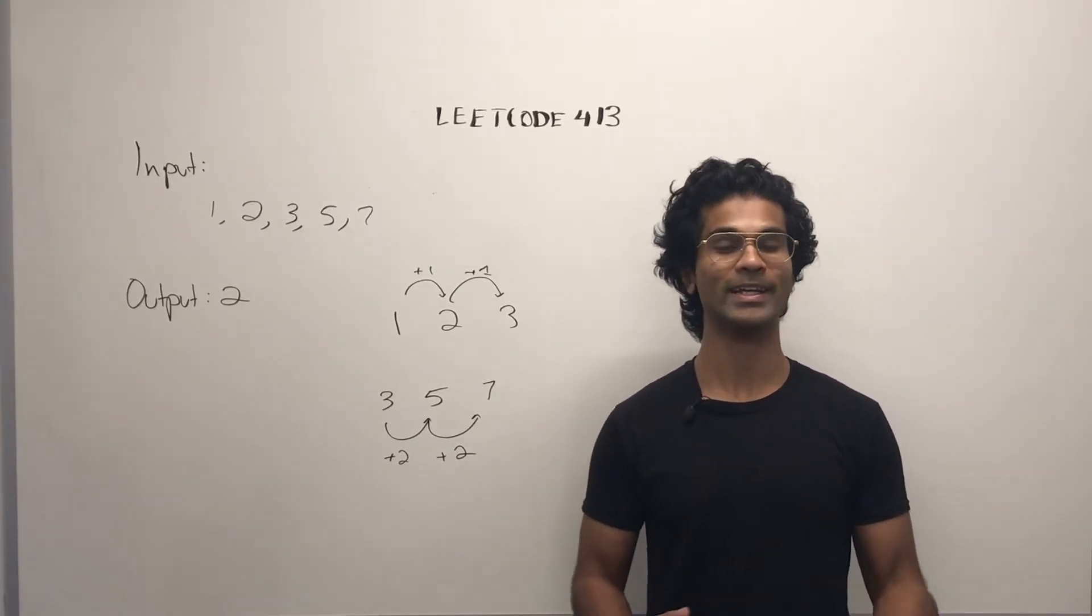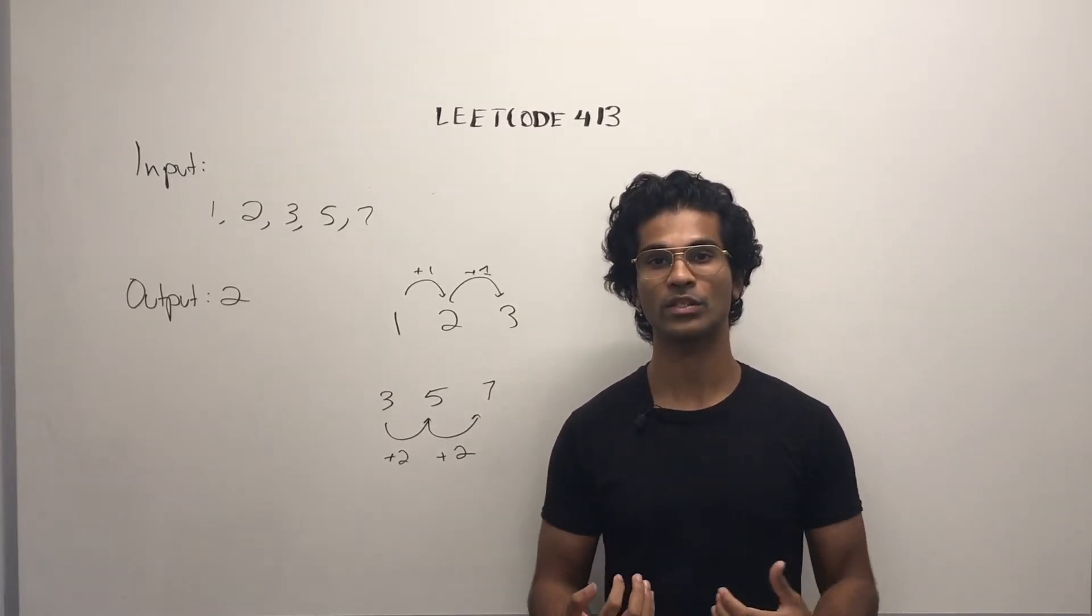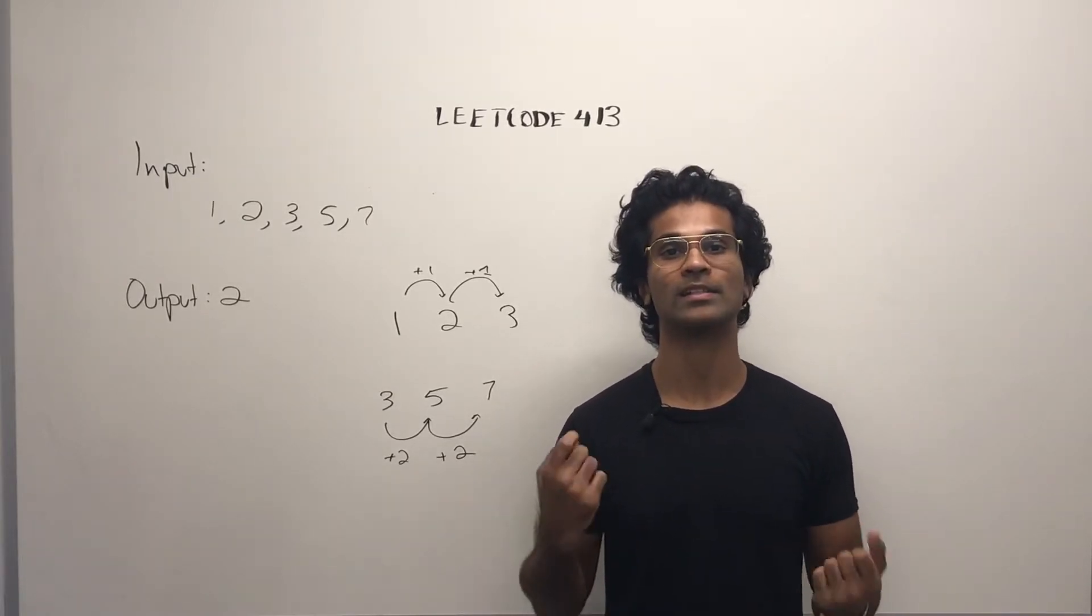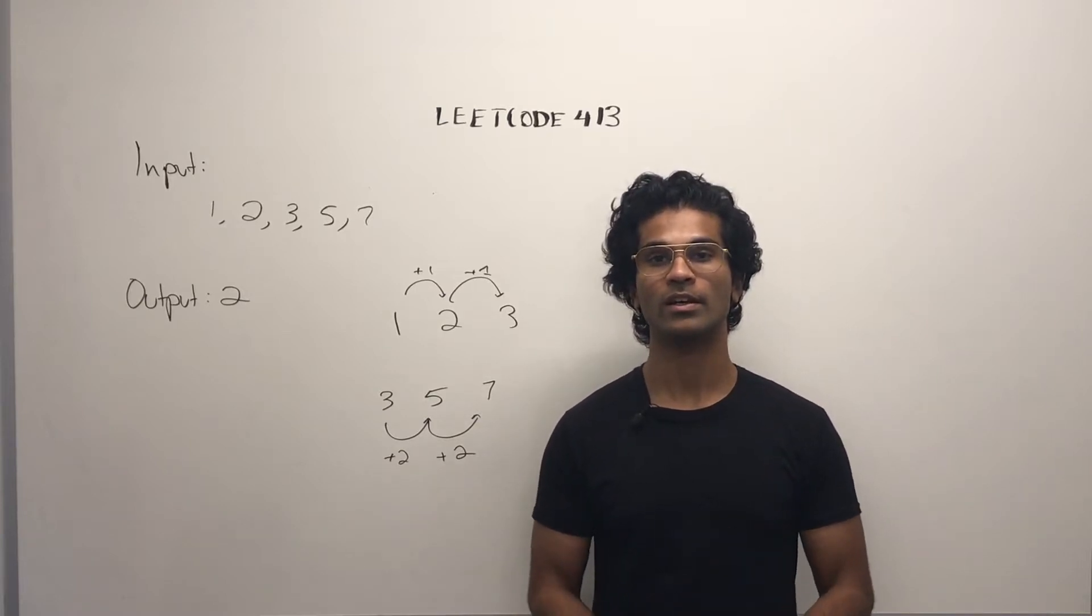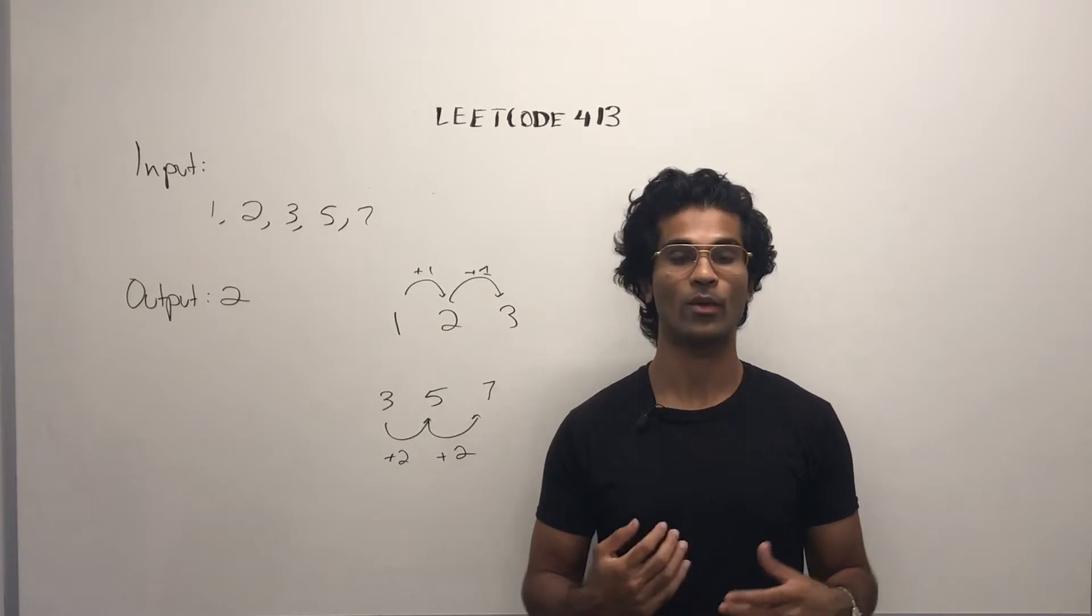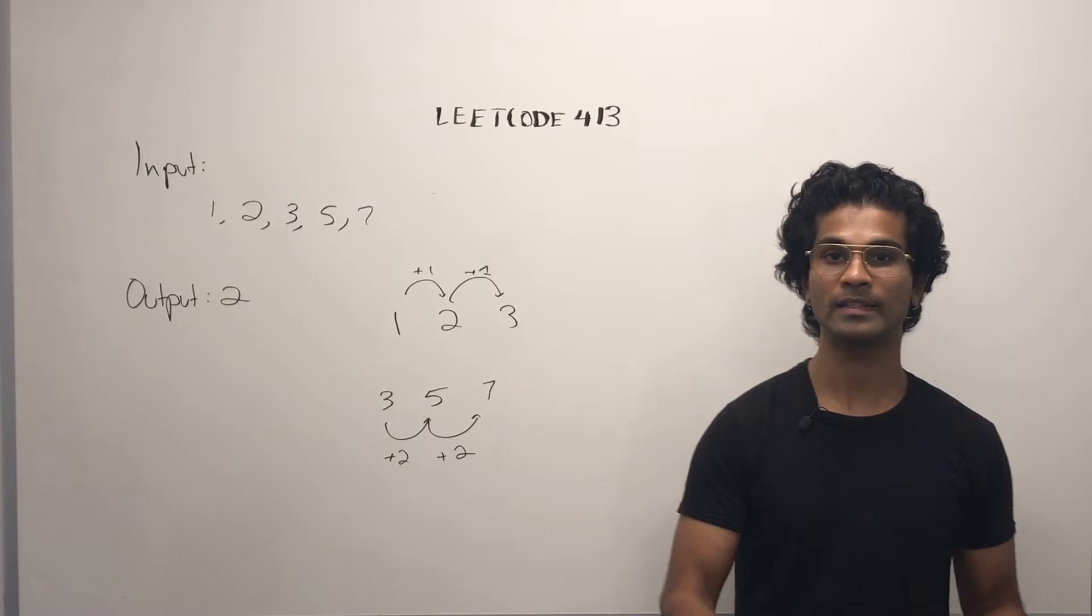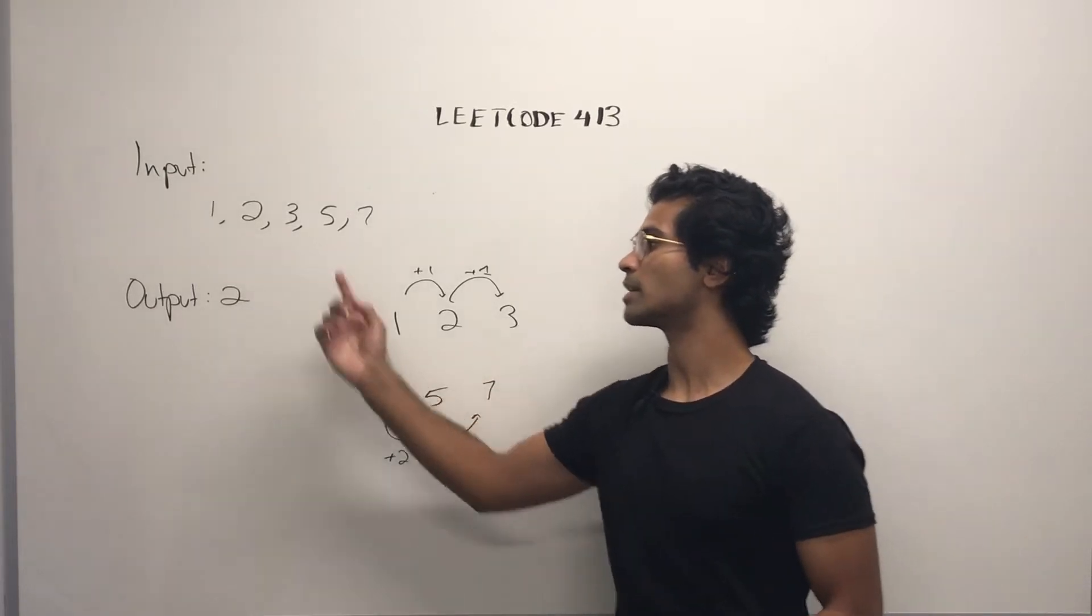Input is going to be an integer array, and the output needs to be an integer. We have to return the total number of arithmetic slices. In other words, what are the arithmetic sequences we have? And they don't have to be the same difference, but we want the total number in the input array. Let's say our input was 1, 2, 3, 5, 7.